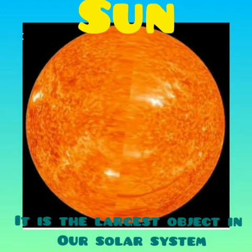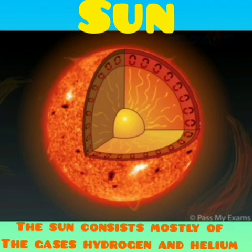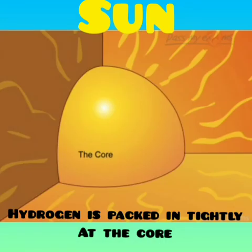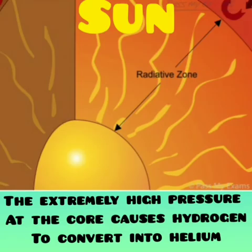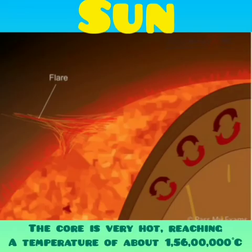Hydrogen is packed tightly in the core. The extremely high pressure at the core causes hydrogen to convert into helium with the release of a huge amount of energy. This energy reaches us in the form of sunlight. The core is very hot, reaching a temperature of about 1,56,000,000 degrees Celsius. The Sun has been shining for millions of years. The surface temperature of the Sun is about 6000 degrees Celsius.